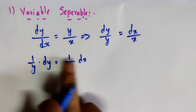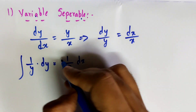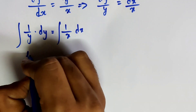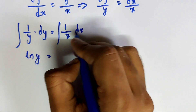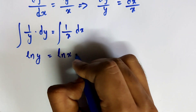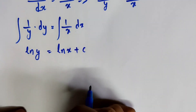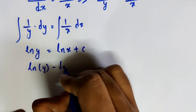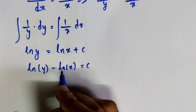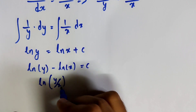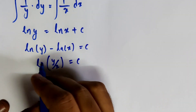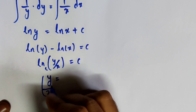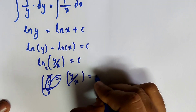Now 1/y dy equals 1/x dx. Integrating both sides: the integral of 1/y dy equals log y, and the integral of 1/x dx equals log x. So log y minus log x equals c. Using the log formula log a minus log b equals log(a/b), we get log(y/x) equals c.